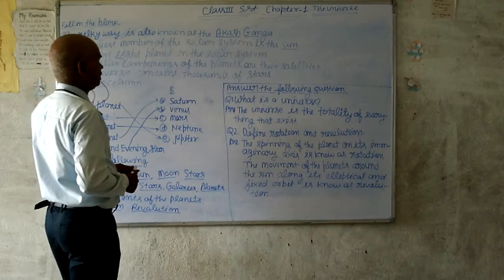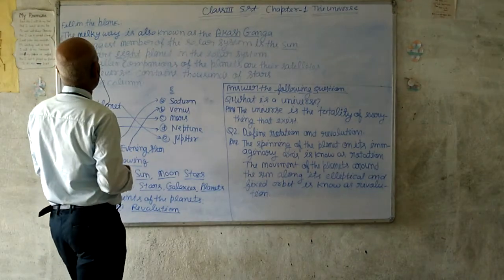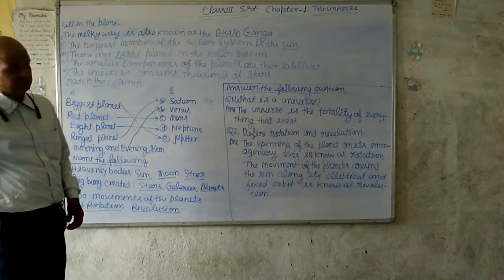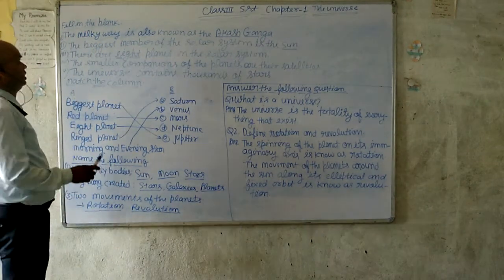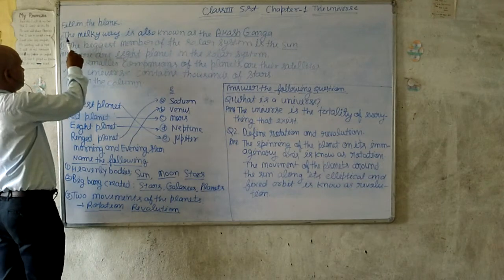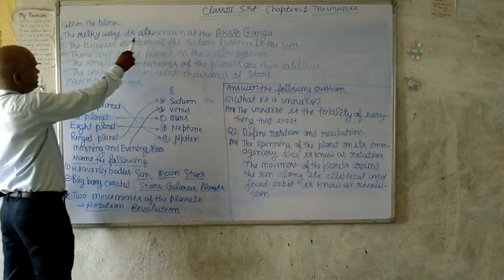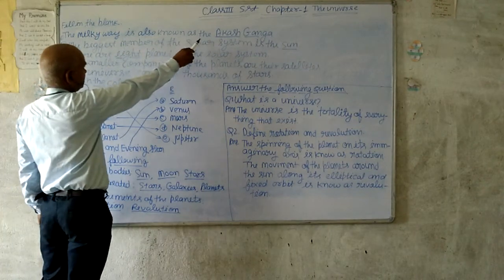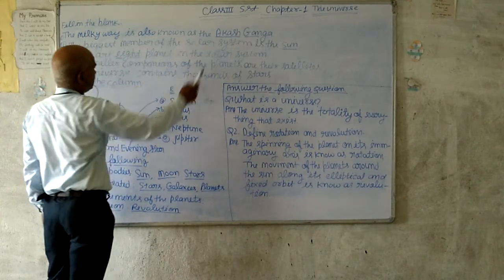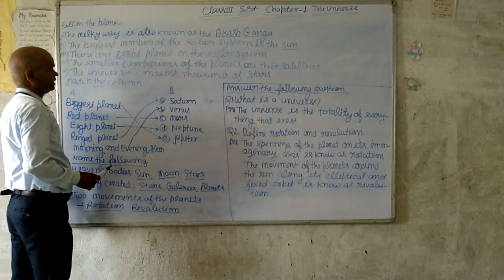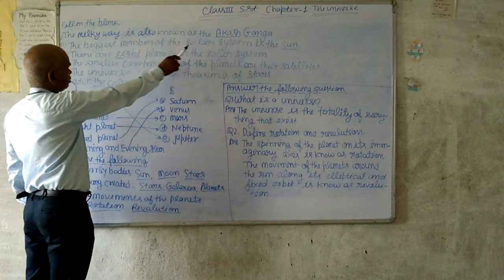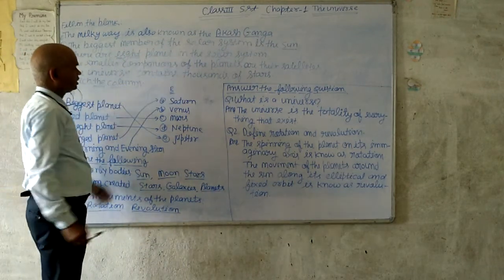Students, I am going to teach you about the Milky Way — Chakravaan. The Milky Way is also known as the Akas Vanda, and it is the biggest system of the solar system.